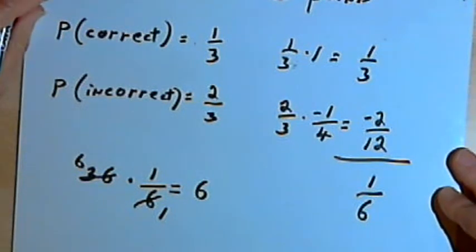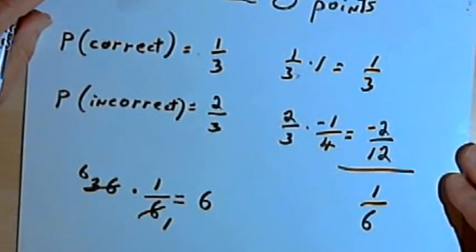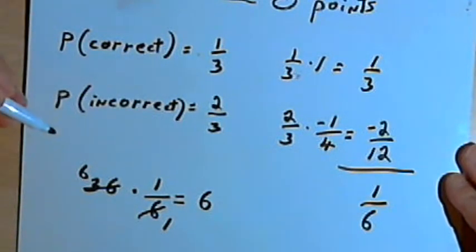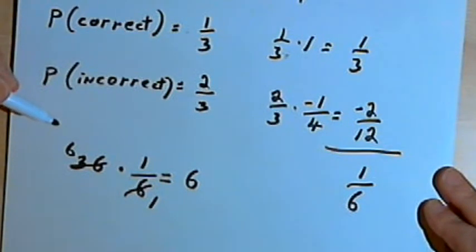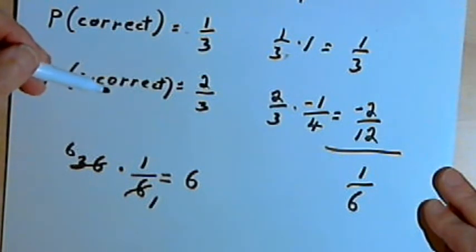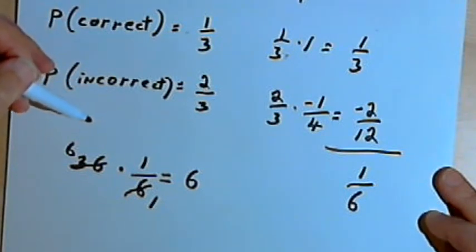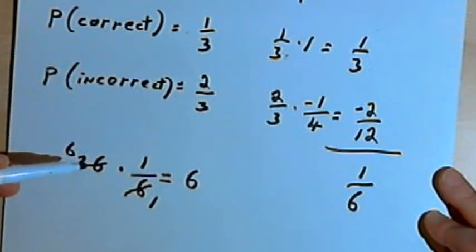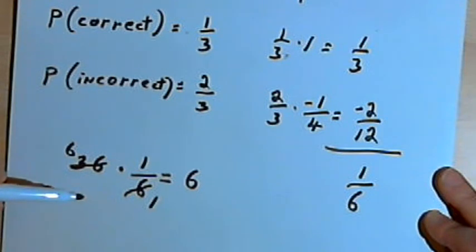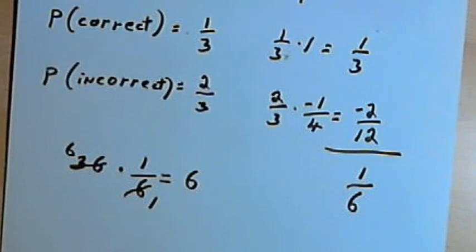Ultimately, it's up to you to decide how much you trust probability and how you feel about guessing. But in general, the rules of expected value say it won't hurt you to guess. If you don't know any of the answers, expected value says you'll just break even. If you can rule out some possible answers, then expected value says you're probably better off guessing. In the end, it's your choice.